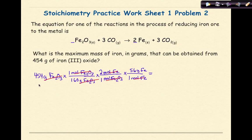The other thing to notice here is that my given is to 3 significant figures. As a result, my answer should also be to 3 significant figures. So if I do 454 times 2 times 56 divided by 160, I get 318 grams of Fe.